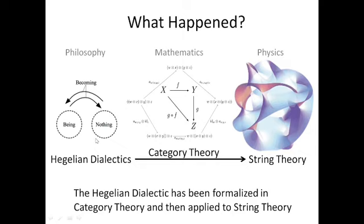We had Hegelian Dialectics in 19th century German idealist philosophy, and then sometime in the 20th century some category theorists decided to mathematically formalize the Hegelian Dialectics in a precise way. And then what happened next is that this categorical formulation of Hegelian Dialectics was applied to open problems in string theory.